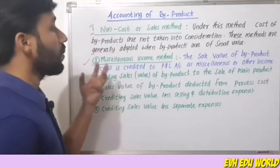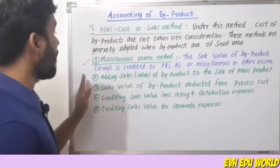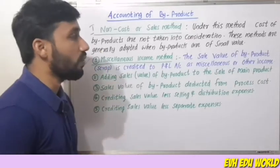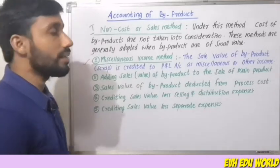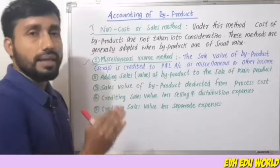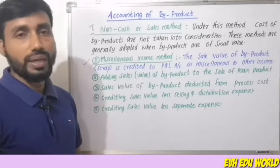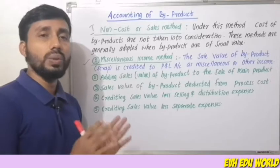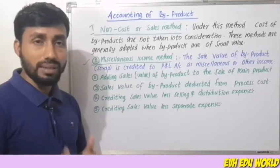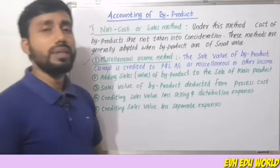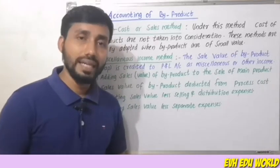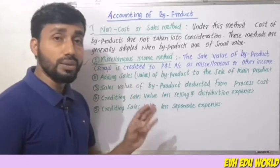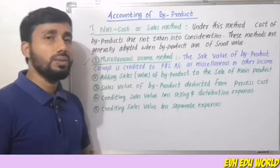This is called the sales method. Under this method, the sales value of the byproduct is added to the sales of the main product. The sales value of byproducts and the main product are combined to give the total cost on the debit side.